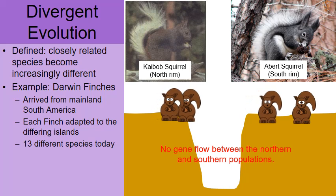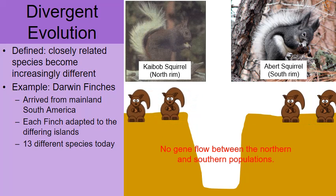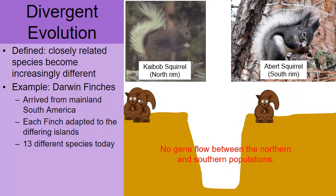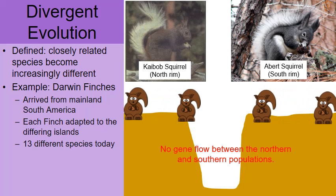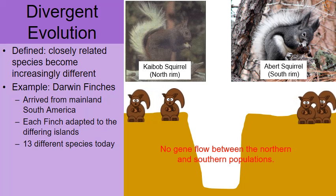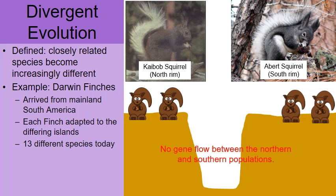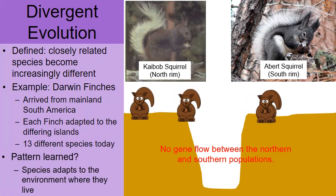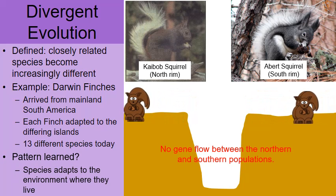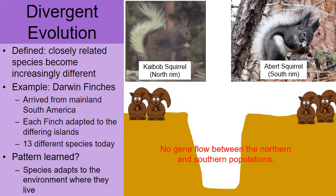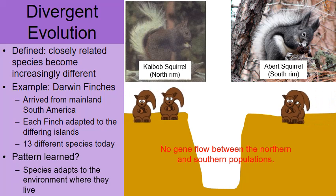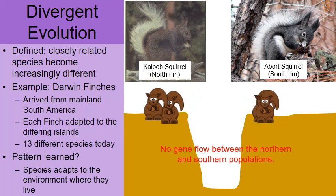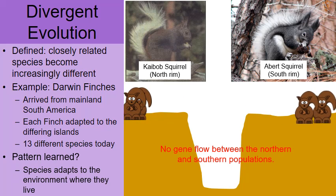They've diverged over the years because they've been geographically isolated — there's been no gene flow between the squirrels on the northern rim and those on the southern rim due to the physical barrier separating them. Over time, they've each adapted to their own unique environment. This is a great example of divergent evolution. The pattern we can take from this is that species will adapt to the environment where they ultimately live and over time will acquire the characteristics of that area.